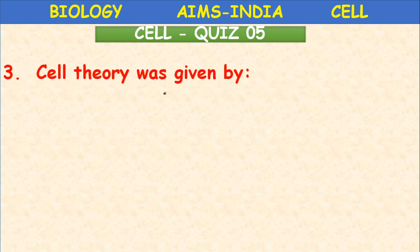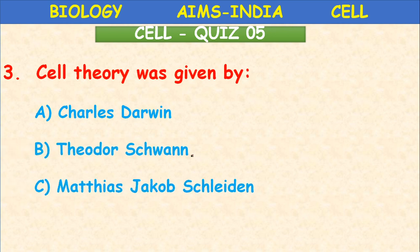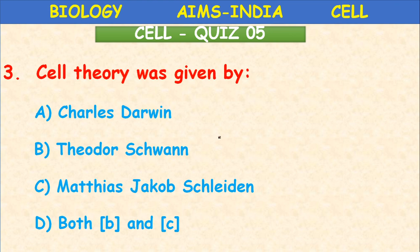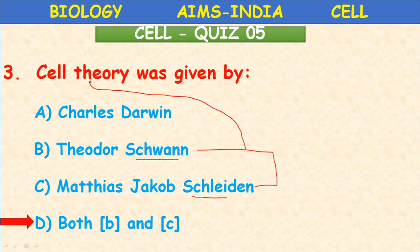Cell theory was proposed by — Charles Darwin, Theodor Schwann, or Matthias Jacob Schleiden? The correct answer is both Schleiden and Schwann. Schleiden was a botanist and Schwann was a zoologist; both together proposed the cell theory, according to which all living organisms — plants and animals — are made up of structural and functional units called cells.